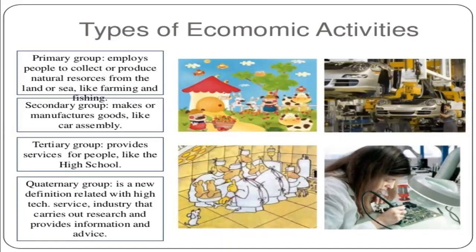Next is the secondary group. This group makes or manufactures goods, like car assembly. Manufacturing of steel and baking of bread are secondary activities. They are not directly related to the extraction or production of natural resources, but rather their utilization. So this type of activity comes in the secondary group.